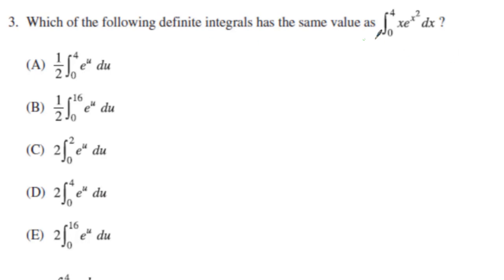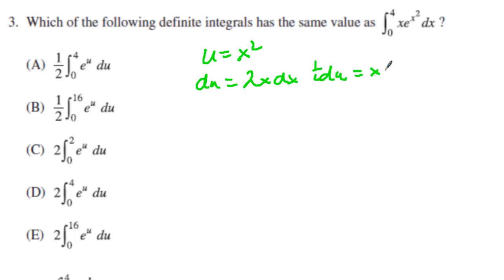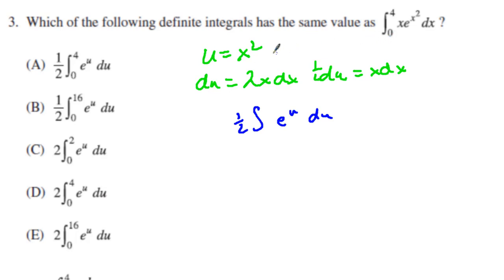Number 3 — we have an integration from 0 to 4, those are our limits of integration, of x times e to the x squared. I'm going to use u substitution. u equals x squared, so du equals 2x dx, or one half du equals x dx. Plugging in, I have one half e to the u. For the limits: 0 squared is 0, 4 squared is 16. The answer is B.